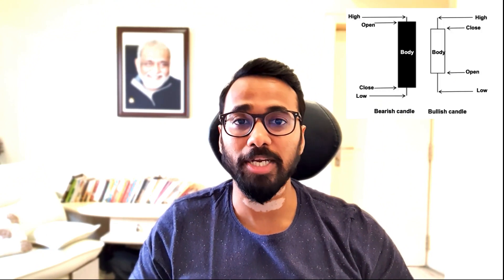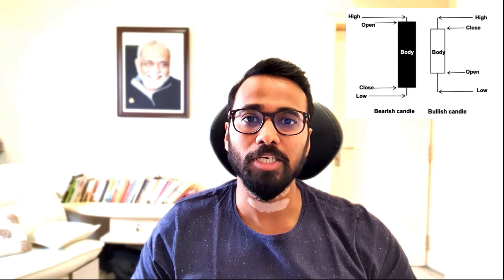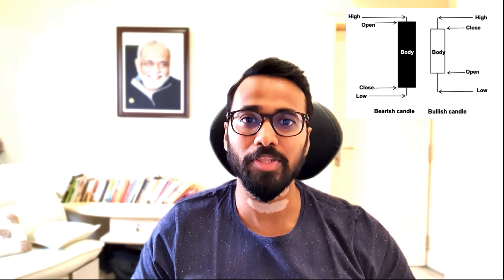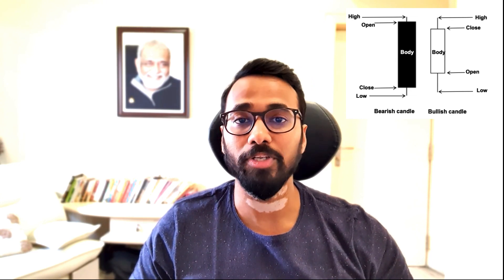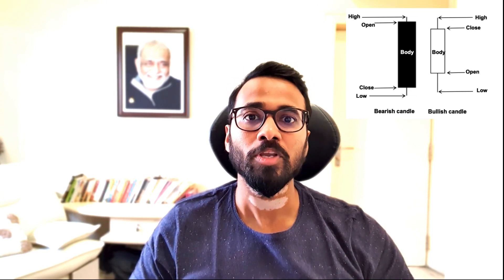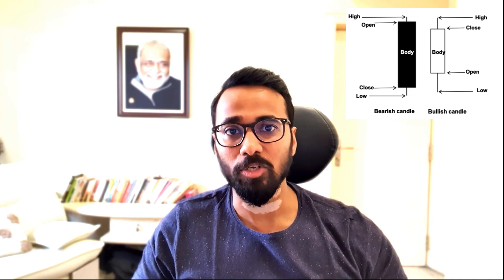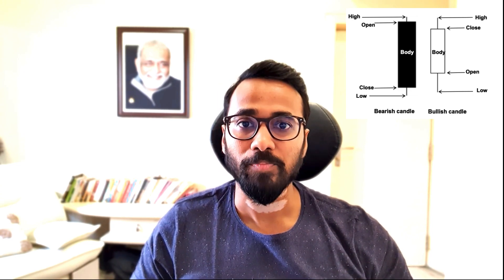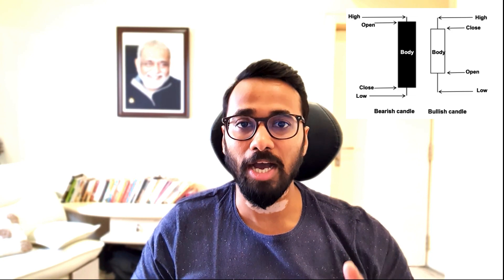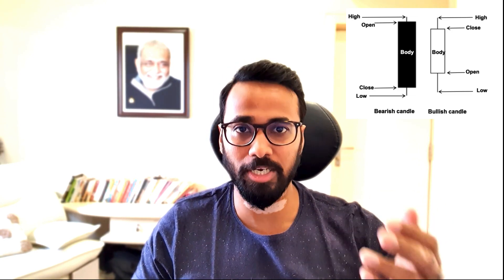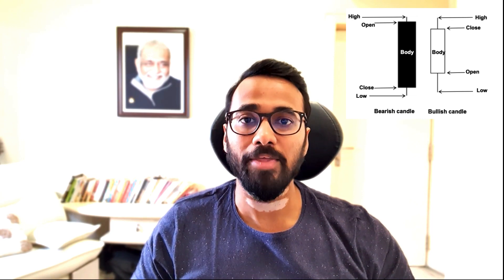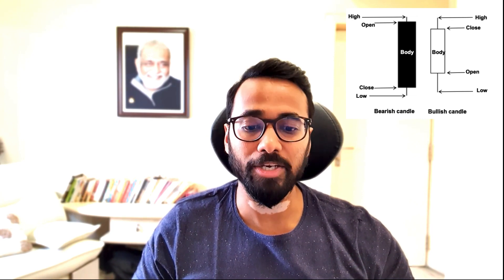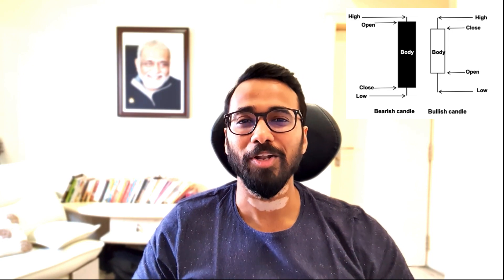We spoke about the white candle, which is a bullish candle, where the opening is lower than the closing. There's a higher wick and a lower wick — the higher wick is the high of the candle, the lower wick is the low of the candle. Similarly, there's a black candle or a red candle, which is a bearish candle. The high of the candle is the higher wick, the low of the candle is the lower wick, and the opening is higher than the closing.